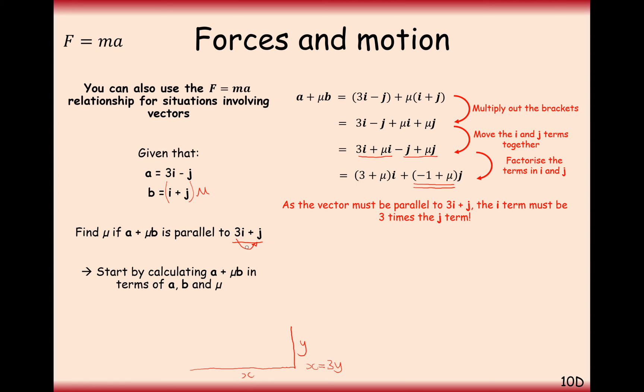Effectively, you're going to times 3 by the other part of the vector here, to get the two to equal each other. So let's do that. Let's set 3 plus mu equal to 3 times the j component, and then expand the brackets and see what you get. And here we get 3 equals mu.